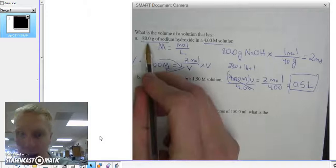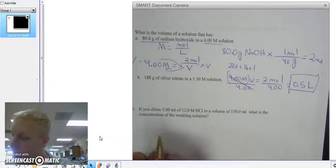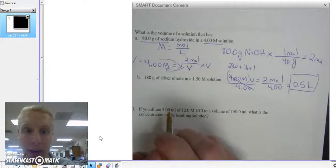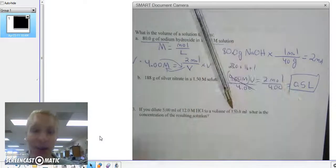So, if I have 80 grams of sodium hydroxide in 4 molar solution, I am going to have 0.5 liters in order for that to happen. That is how you do a molarity problem.